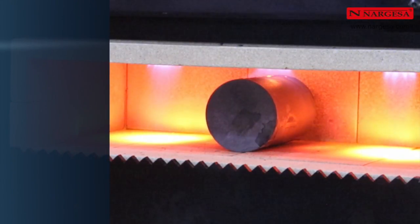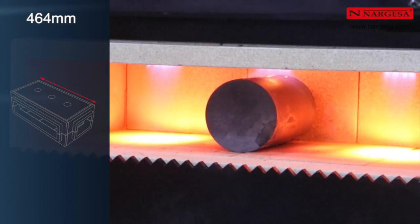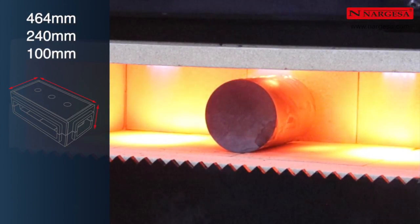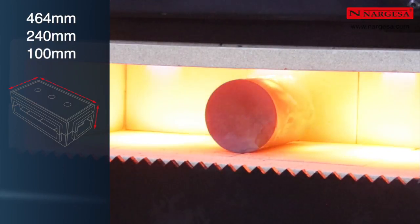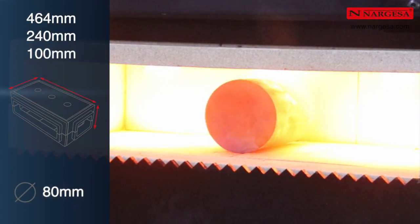Les dimensions de la chambre de combustion de 464 mm de large pour 240 de profondeur et 100 de hauteur permettent la mise à température d'une barre ronde pouvant aller jusqu'à 80 mm.